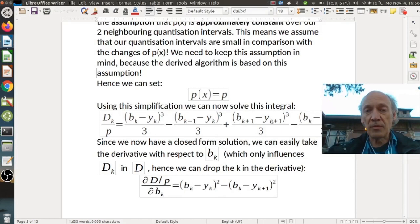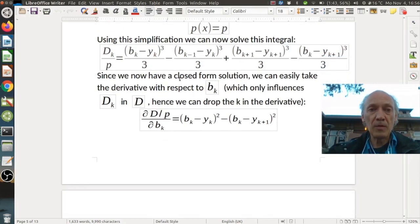And this is the upper interval. Upper end minus lower end of the integral. And then we put this p on the other side. So we divided both sides by p. And here we also see that we need to assume that this p is the same on both of these neighboring intervals. So now we have a closed form solution. We can easily take the derivative with respect to b_k^2. So which only influences d_k in d. So hence these intervals. Hence we can drop the k in the derivative.